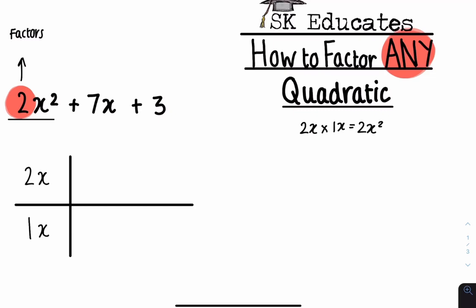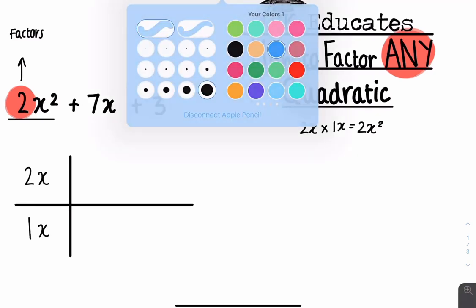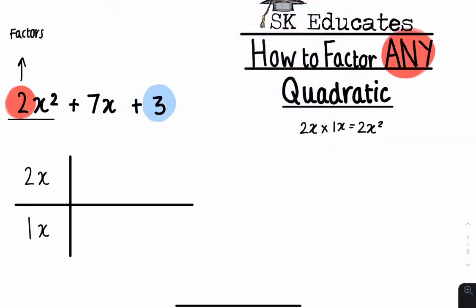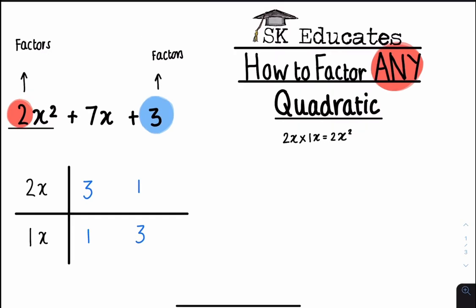The same 2x squared that we have here. Then you have to look at your last number, which in this case is a 3. And again, you want to list the factors of this number. Your factors of 3 are simply 3 and 1 or 1 and 3. It is really important you write it both ways, and you'll understand why when we go through the working.